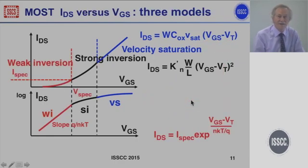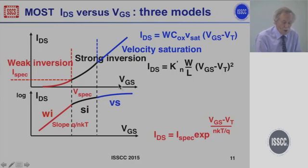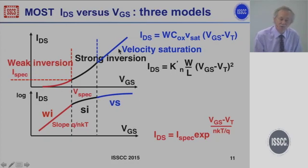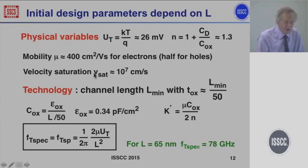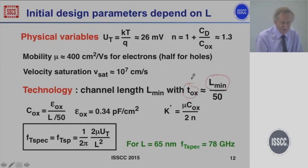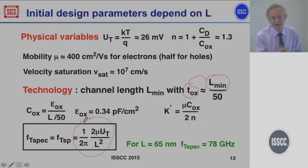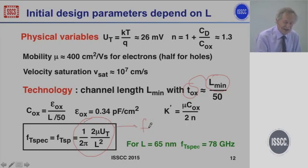Now we can put everything together. Here is the model with three areas: low current, middle current, high current. As a designer, the first task is to determine where my VGS minus VT should be — or equivalently, my IC. The first step before design is to set KT/Q, N, mobility, VSAT as constants, and for my minimum channel length, where the oxide thickness is about 1/50th of that, calculate the oxide capacitance. There is a specific FT related to your channel length — it determines the specific FT at inversion coefficient IC equal to 1.